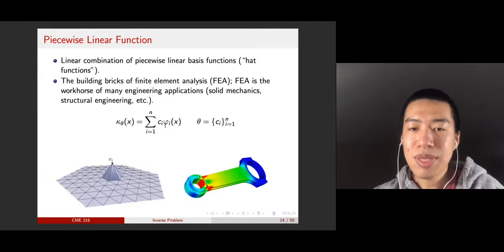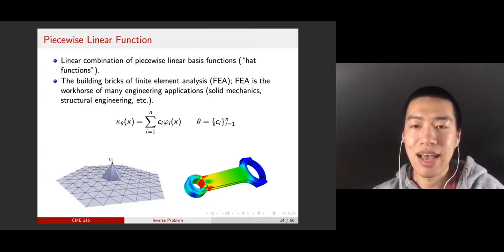The parameter here is a bunch of c_i's, where c1, c2, to cn, which is an n-dimensional vector. So, you reduce your infinite dimensional problem to finite dimensional problem, where you just want to estimate those c_i parameters.